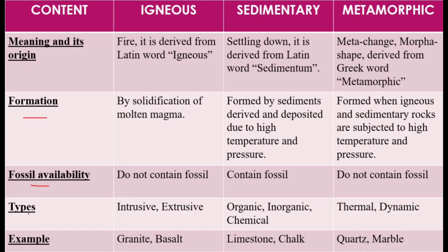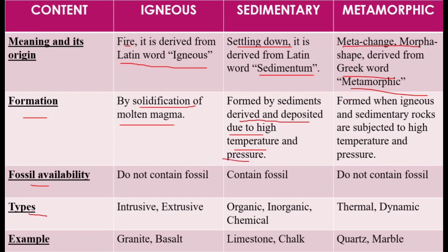Regarding etymology and formation: 'Igneous' is derived from the Latin word meaning fire; igneous rocks are formed by solidification of molten magma and do not contain fossils. 'Sedimentary' comes from the Latin word 'sedimentum,' meaning settling down; sedimentary rocks are formed by sediments deposited under high pressure and temperature and do contain fossils. 'Metamorphic' is Greek — 'meta' means change, 'morphic' means shape; metamorphic rocks form when igneous and sedimentary rocks are subjected to high temperature and pressure, and do not contain fossils.